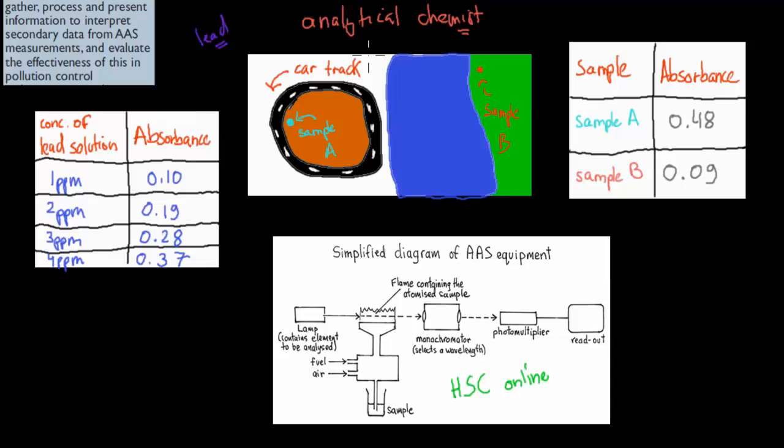So you might check if there's lead pollution at different types of sites. First you go to a car track made in the 1950s. You go to the soil surrounding the car track and take a sample, label it sample A. Then you go to a foresty area and at some random spot collect another sample, sample B.